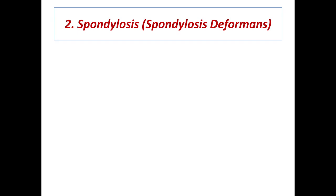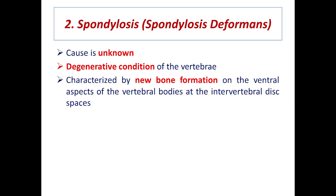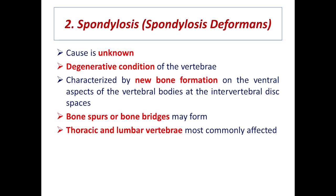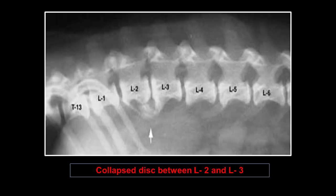Spondylosis, also called spondylosis deformans, has an unknown cause. It is a degenerative condition of the vertebrae in which there is new bone formation on the ventral aspect of the vertebral bodies at intervertebral spaces. Bone spurs and bone bridges can form. The most commonly affected sites are thoracic and lumbar vertebrae. There are usually no clinical signs since it forms on the ventral aspect and does not put pressure on the spinal cord or nerves. Radiological signs are best demonstrated on lateral views. In this radiograph between L2 and L3, the intervertebral space is collapsed with sclerosis due to new bone formation on the ventral aspect — a clear case of spondylosis.